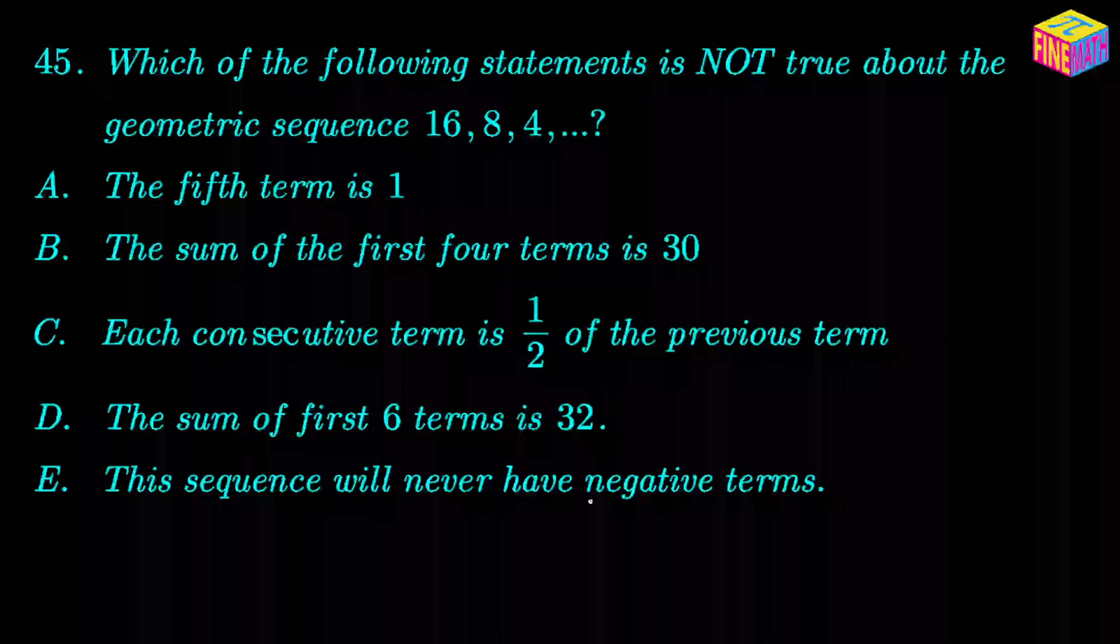The question here says which of the following statements is NOT true, meaning which of the following statements is false. So we have to find out the false statement. There will be exactly one false statement in the answer options. Which of the following statements is not true about the geometric sequence 16, 8, 4? So you see that this is a geometric sequence which is reducing gradually.